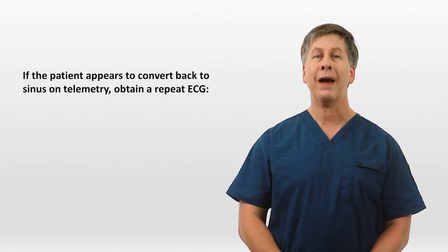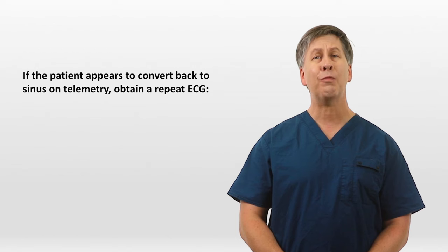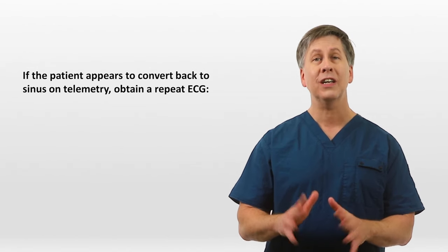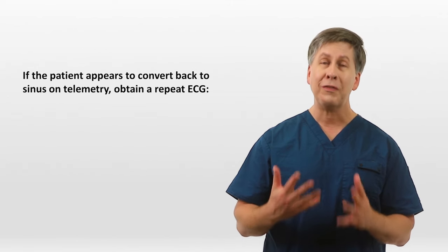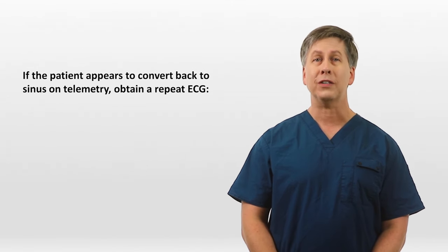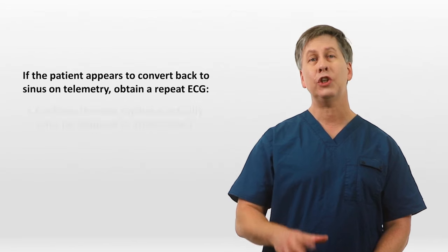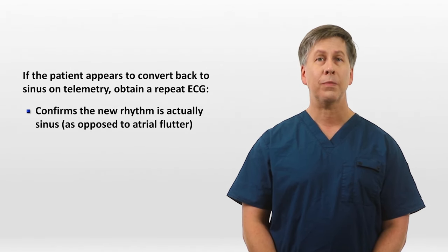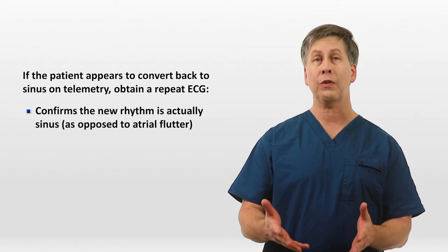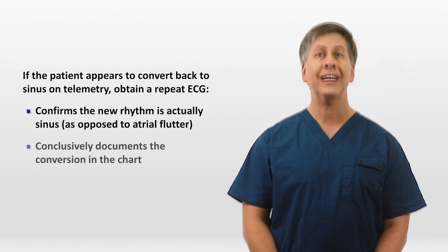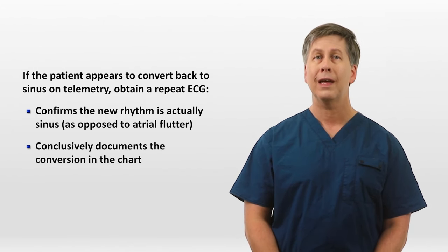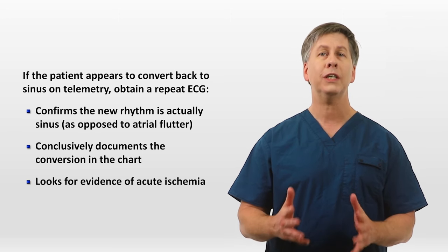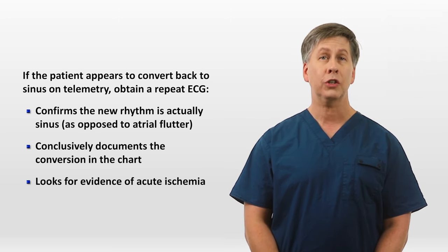One final note: if the patient appears to convert back to sinus on telemetry, obtain a repeat ECG. Although that might sound obvious, I've seen more than one intern, resident, or even attending neglect to do this. Repeating the ECG confirms the new rhythm is actually sinus — as opposed to something like atrial flutter with fixed AV block — it conclusively documents the conversion in the chart, and it will also look for evidence of acute ischemia which might have been absent or difficult to discern on ECG at rapid heart rates.